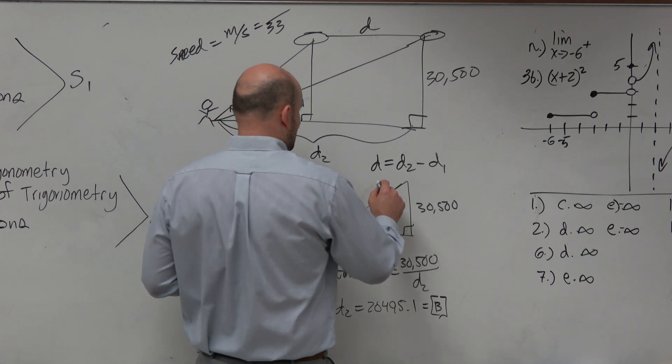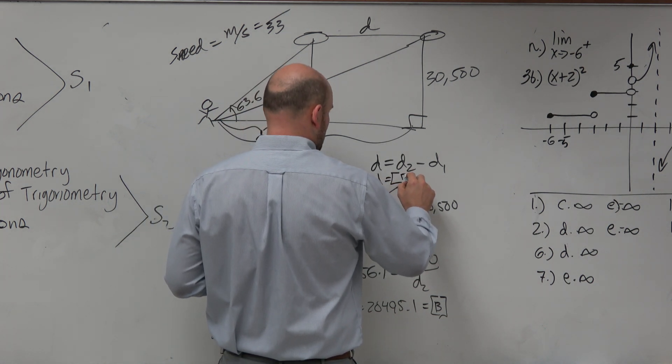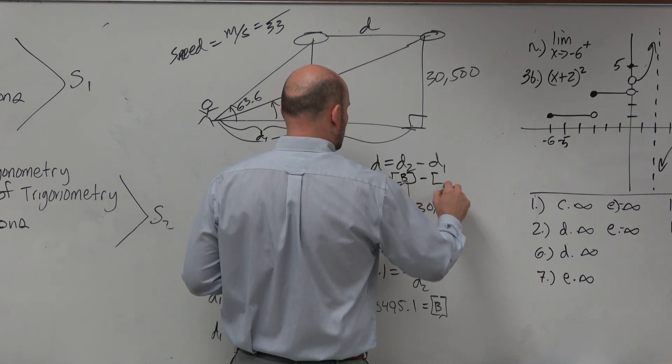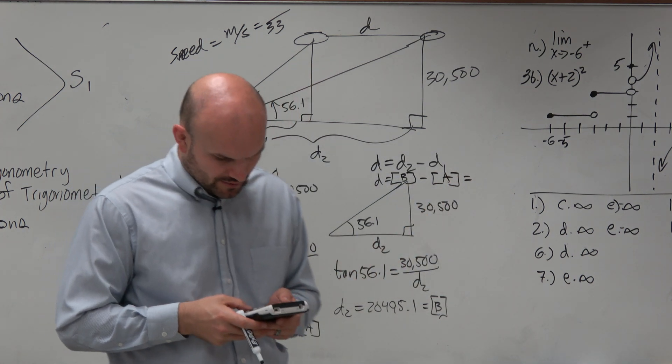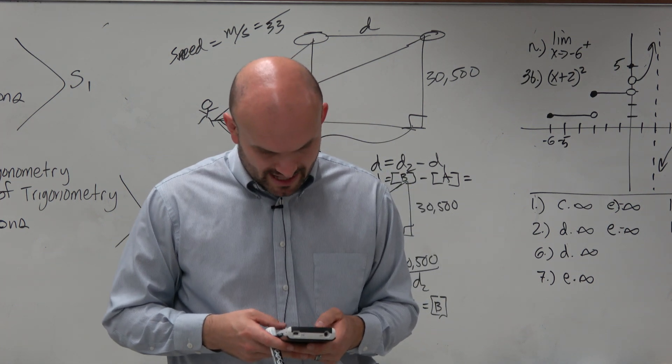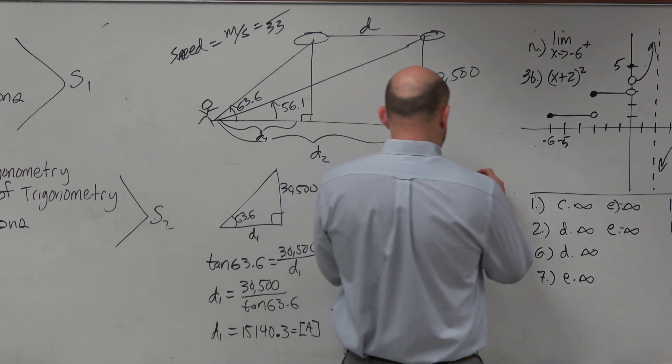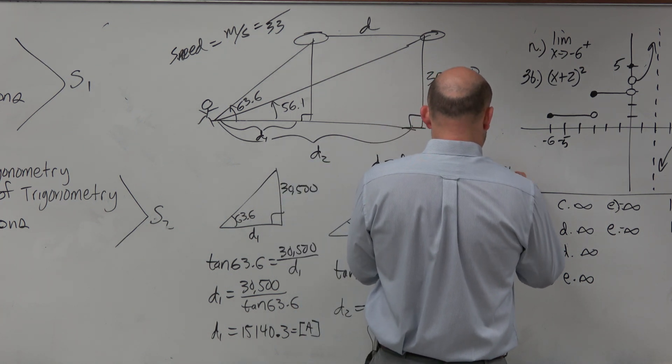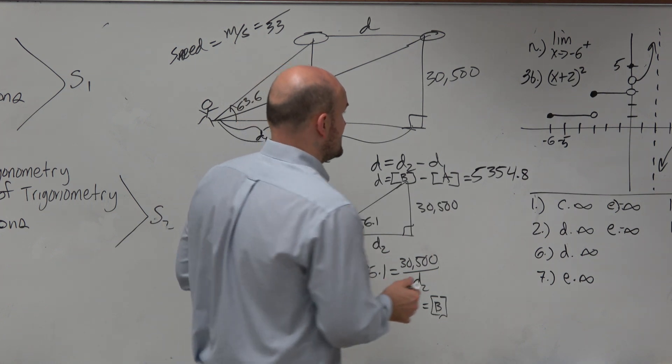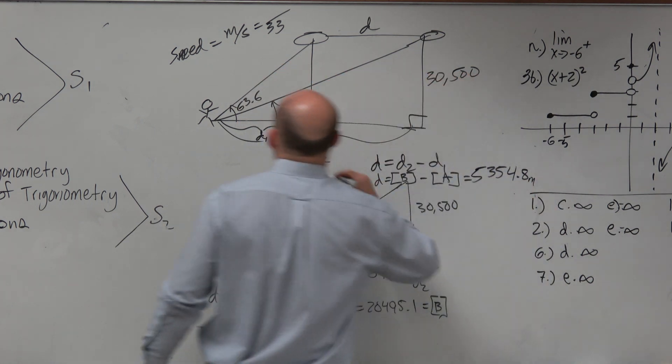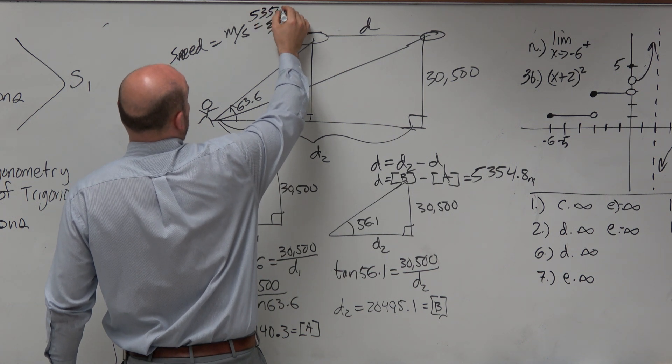So then D equals my alpha B minus my alpha A. And therefore, I do alpha B minus alpha A. And I get 5,354.8. So that is how far it traveled in meters, right? And that's what I was looking for, 5,354.8.